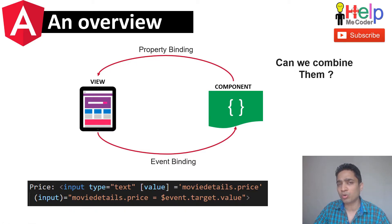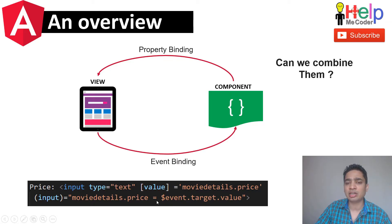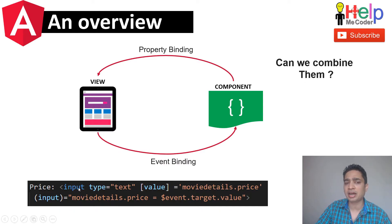To send the typed value back, you use event binding. You wrap the event with parentheses — for example, the input event — and provide an expression equal to $event.target.value, where $event is the payload containing all details about the input tag. Whatever you type will be passed back to the property defined in your component class.